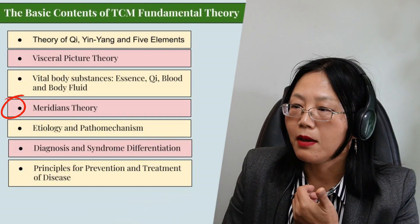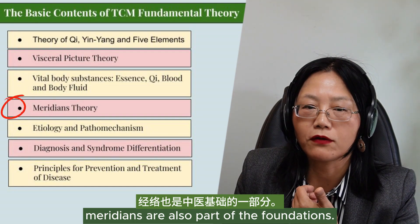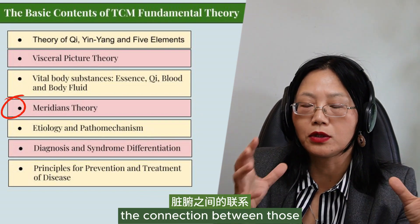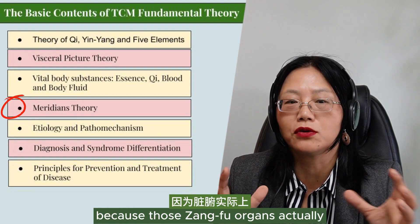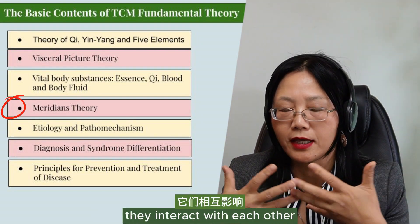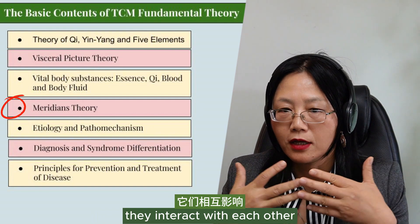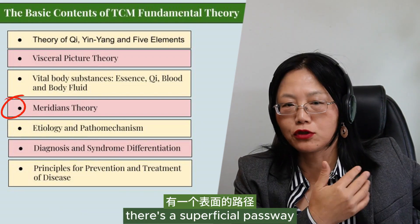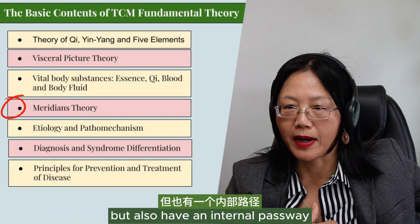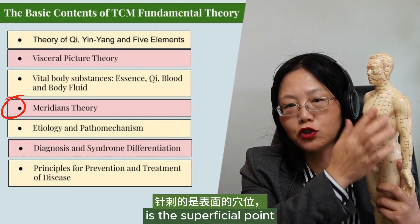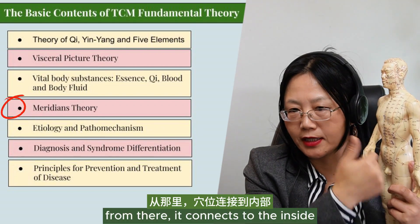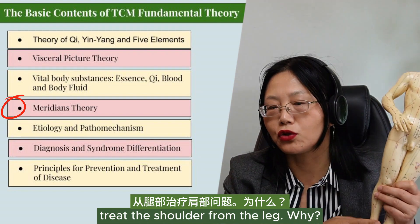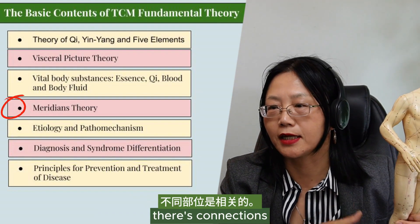Another topic is meridians. Meridians are also part of the foundations. Meridians are super important for understanding the connections between the separate zhangfu organs, because those organs are actually not separated — they interact with each other. The connection is the meridians. There is a superficial pathway but also an internal pathway. Whatever you can needle is the superficial point; from there it connects to the inside. For example, shoulder pain may be treated from the hands or from the leg — there are reasons and connections.